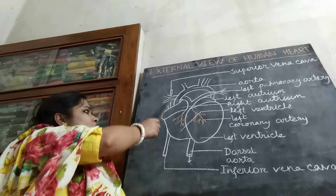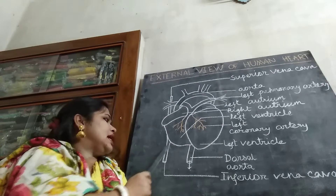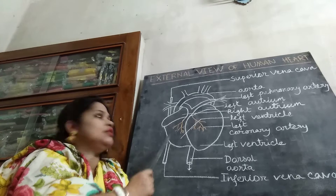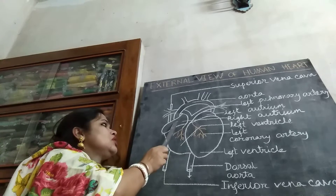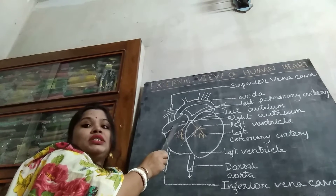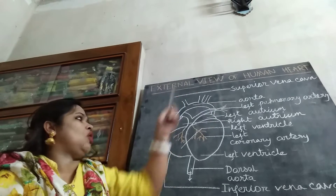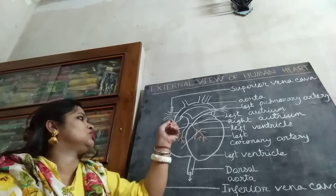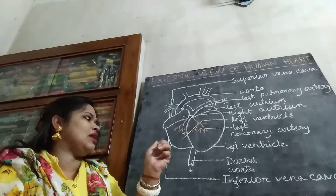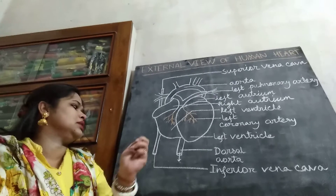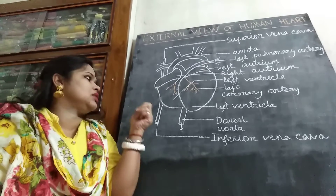This narrow blood vessel is the superior vena cava, and the bottom part is the inferior vena cava, draining deoxygenated blood from the upper and lower parts of the body into the right atrium. The superior vena cava brings deoxygenated blood from the upper body, and the inferior vena cava brings it from the lower body — both draining into the right atrium, not the right ventricle.